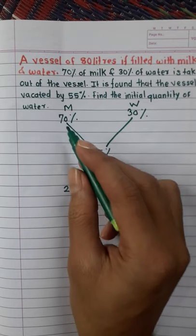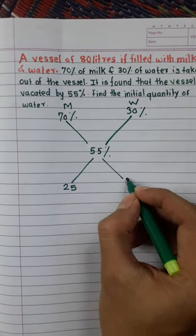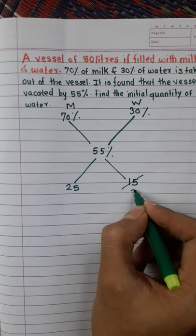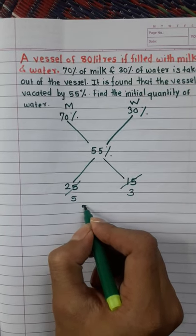And 70 minus 55 is 15. Therefore, the ratio becomes 25:15, which simplifies to 5:3.